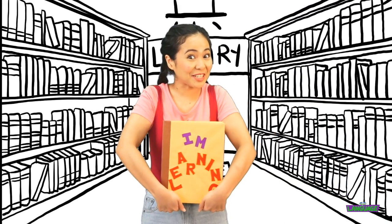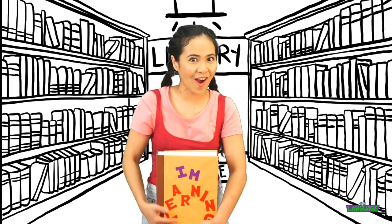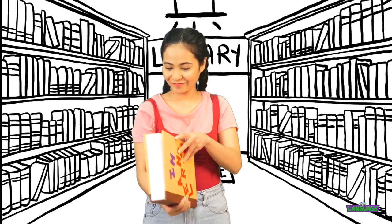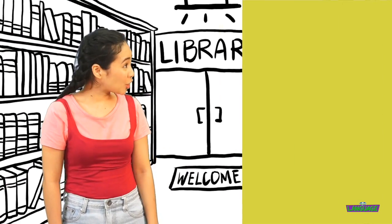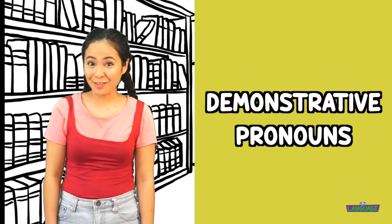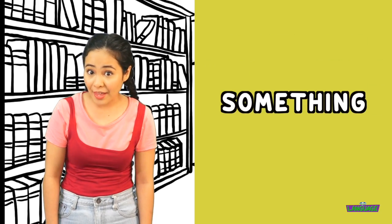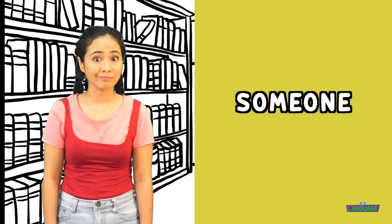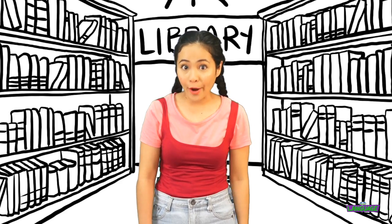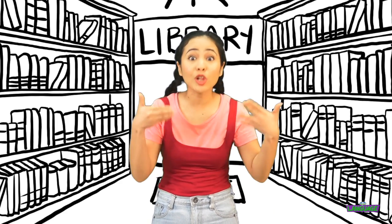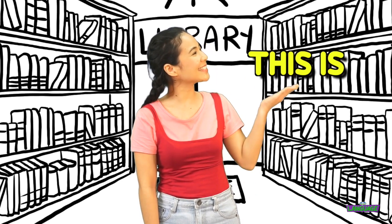Let's check out my magic book to see what demonstrative pronouns are. Demonstrative pronouns are used to point out something or someone. To refer to one person or one object close to us, we use 'this is.'